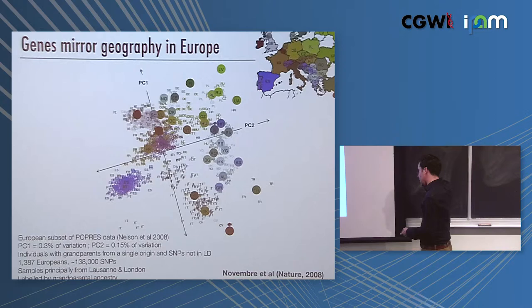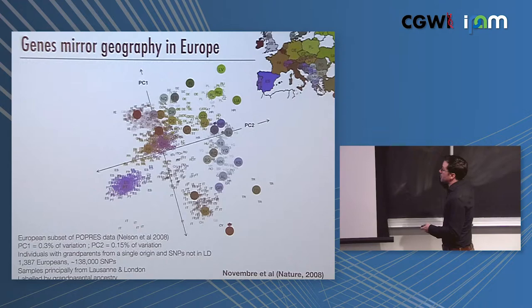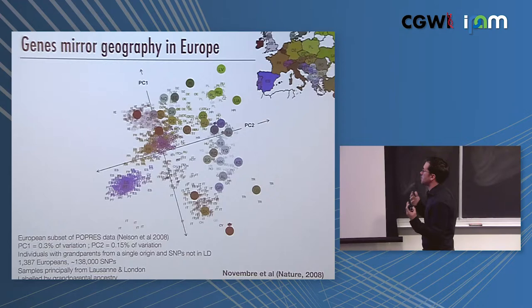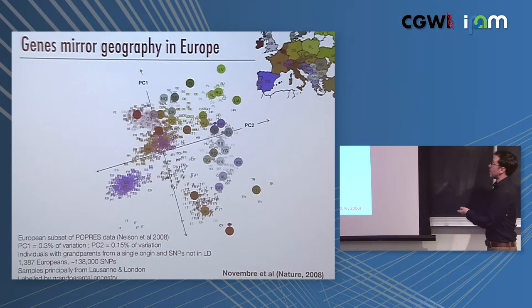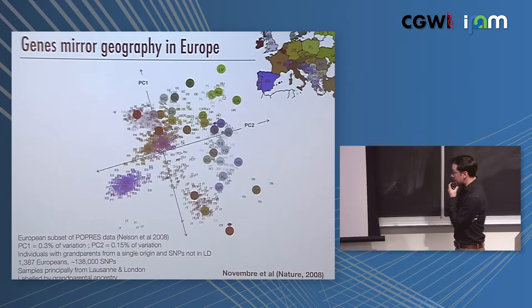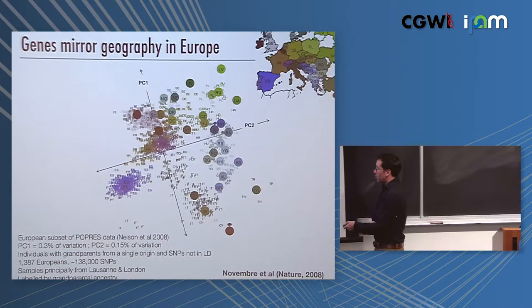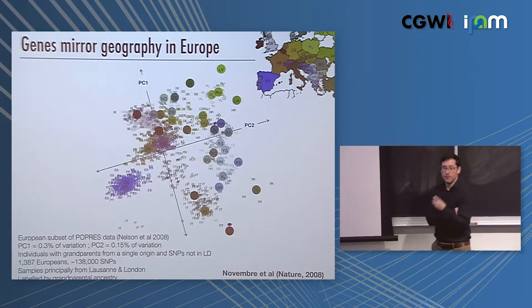Here's an application of PCA that I was able to do with a great collaboration with the POPRES data, which is data generated by GlaxoSmithKline from individuals mainly sampled in London and Lausanne who reported all their geographic information about their geographic ancestry and their grandparental geographic ancestry. These are individuals whose grandparents showed a single origin, and then they're labeled by that origin. This is a legend, each of these two-letter codes is a single individual. What you see is the PCA of the genetic data strongly reflects the geography of Europe, where you have Spain, Portugal, France, Switzerland moving through here. Hopefully you're seeing the similarity.